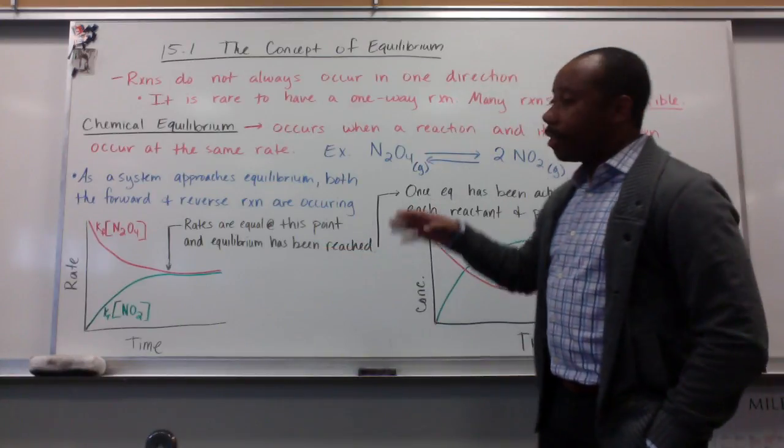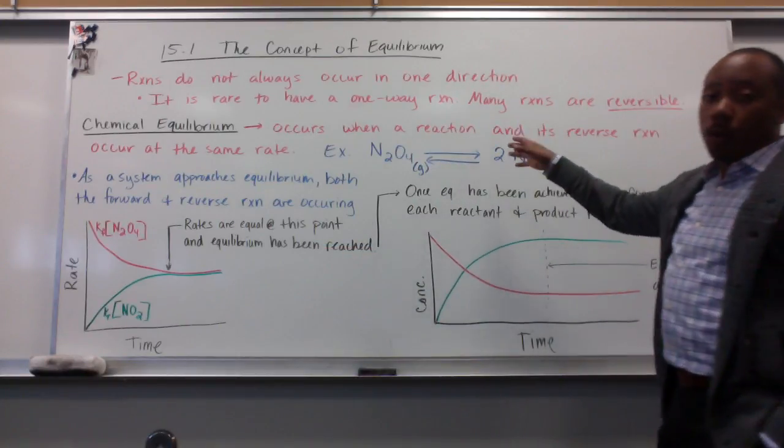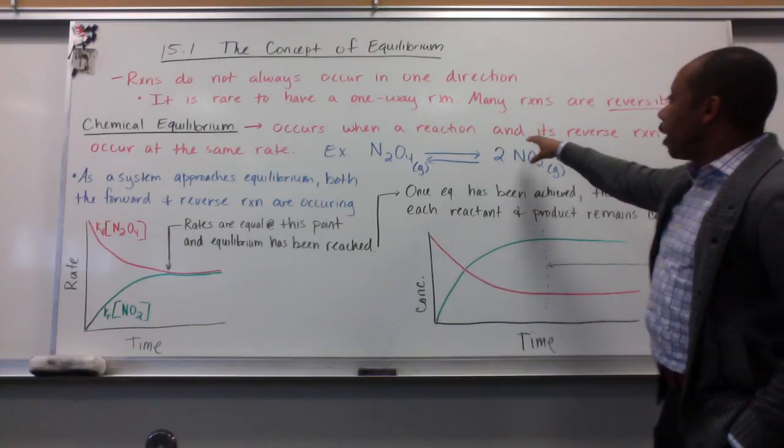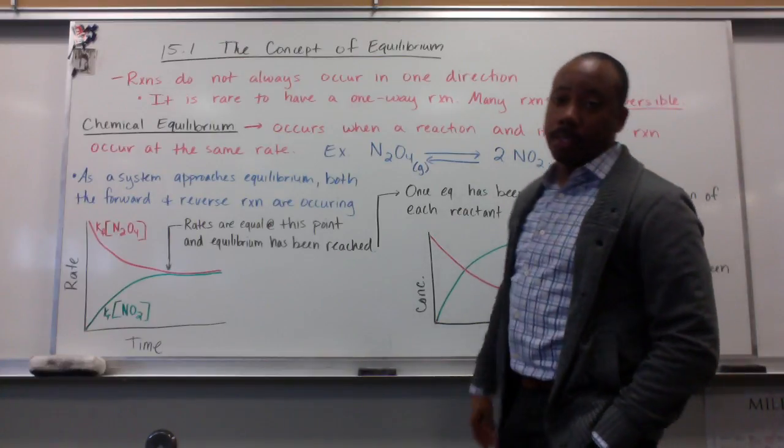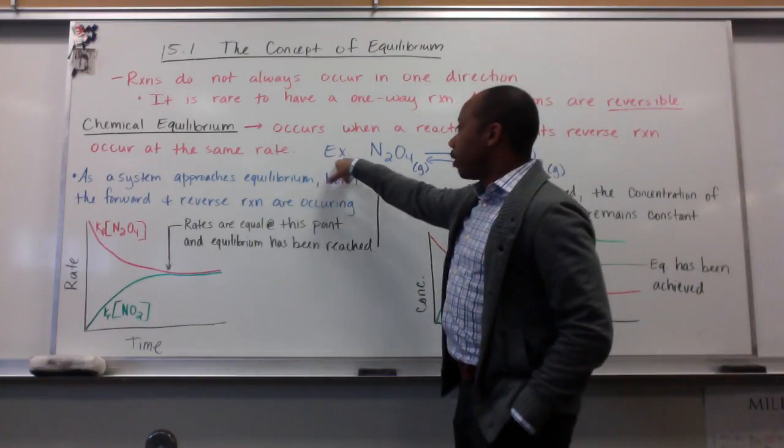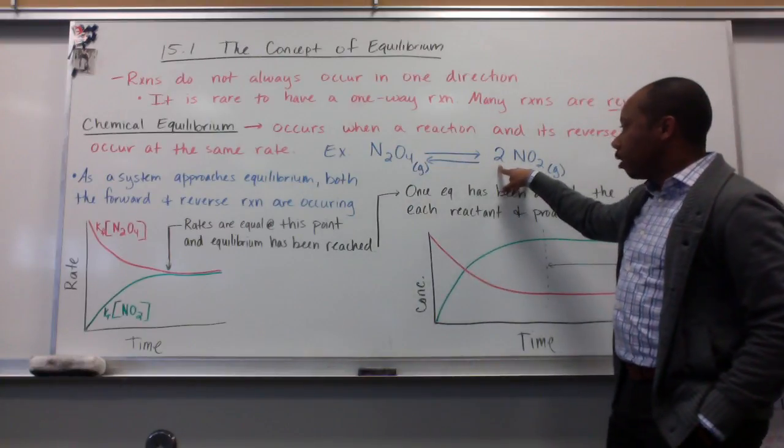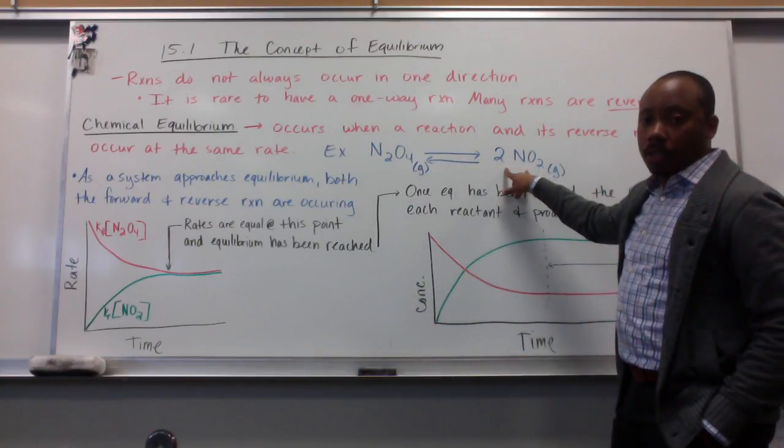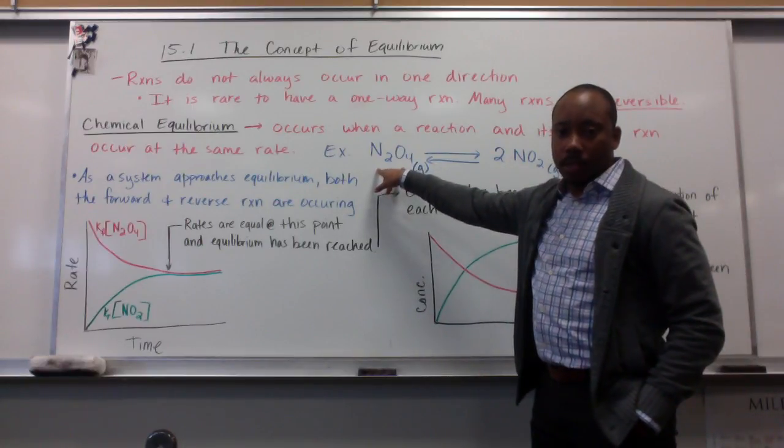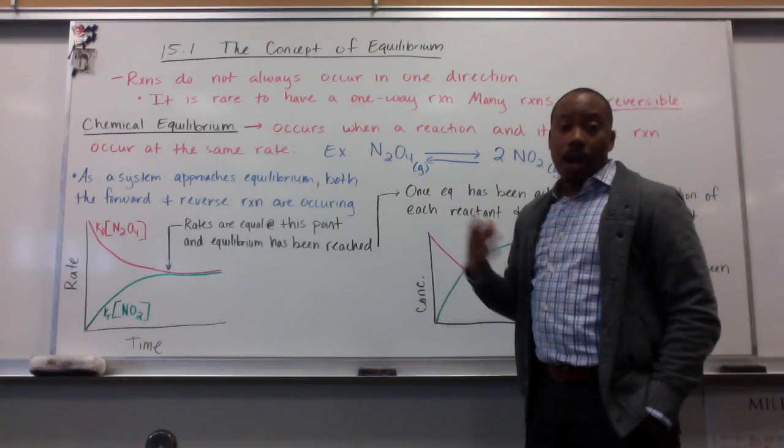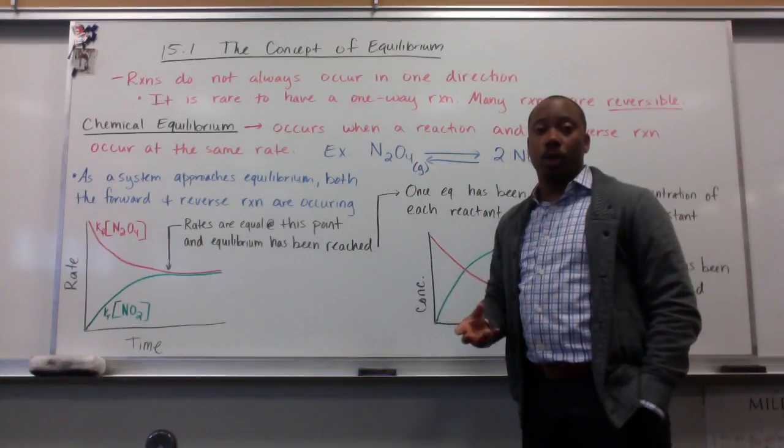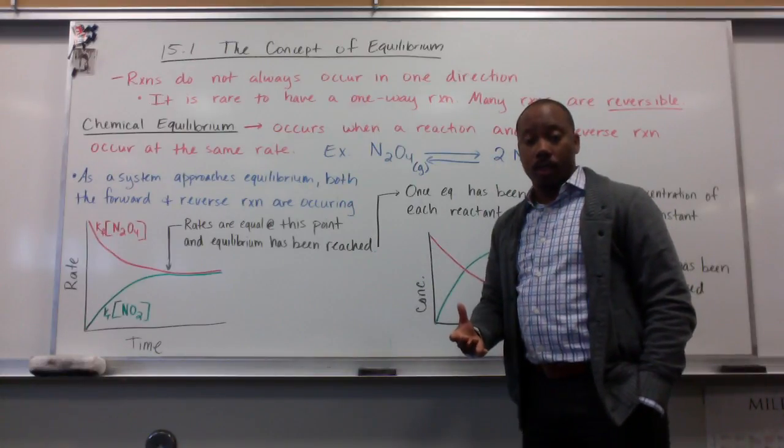So, chemical equilibrium is when what occurs when a reaction and its reverse reaction occur at the same rate. For example, my reactants here collide together to form product, and my product collides together to form reactants. This happens over time. So, for us, to the naked eye, it appears as though the reaction is stopped.